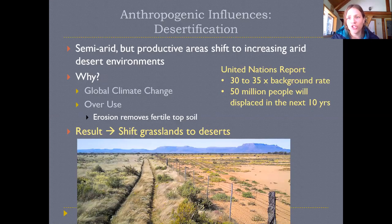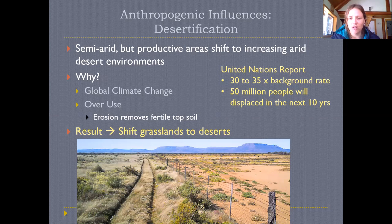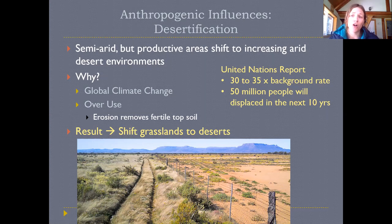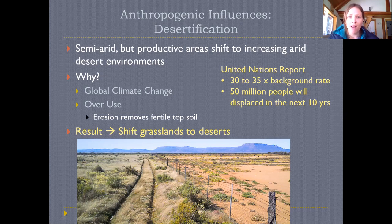We've talked about anthropogenic influences on biomes, including tropical deforestation. Now I want to introduce another human-driven change called desertification. Desertification is the process where semi-arid areas and their ecosystems shift increasingly towards becoming deserts. It happens not in the desert itself but in desert-adjacent areas — tropical savannah or shrub ecosystems closer to the equator, and mid-latitude grassland or Mediterranean shrubland ecosystems on the other side.